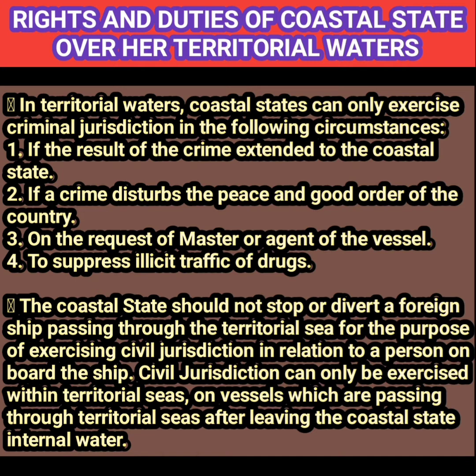Those are the four possibilities under which a coastal state may exercise criminal jurisdiction in the territorial waters. Regarding civil jurisdiction, the coastal state should not stop or divert a foreign vessel passing through the territorial sea for the purpose of exercising civil jurisdiction in relation to a person on board the ship. Civil jurisdiction can only be exercised within territorial sea on vessels passing through after leaving the coastal state's internal waters.